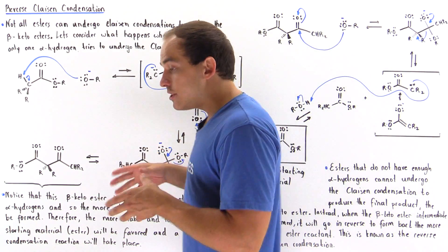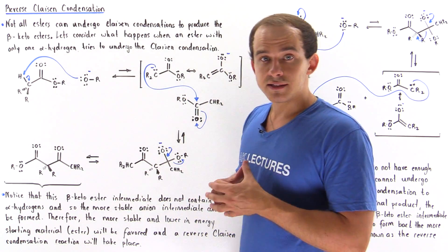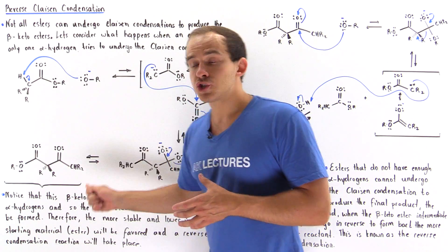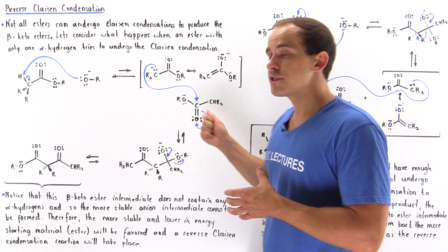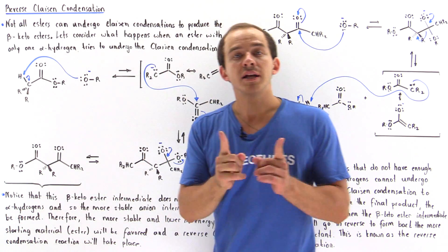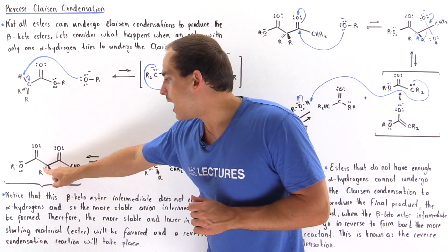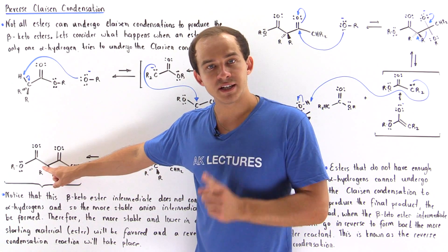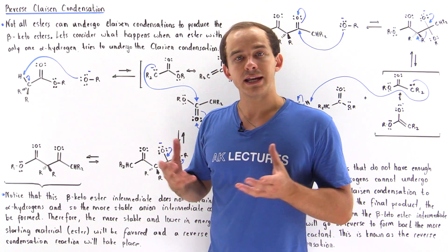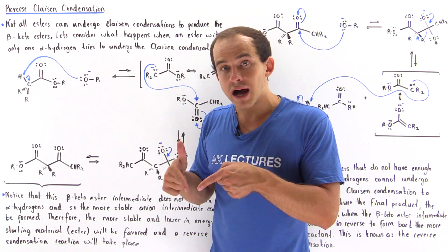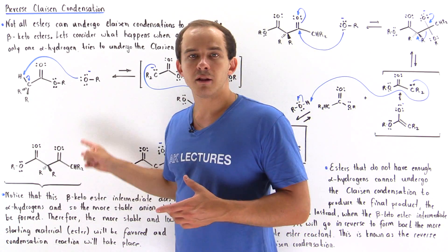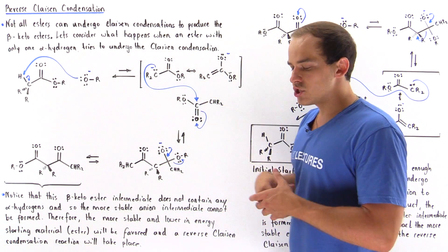In the regular Claisen condensation, this intermediate is not the final product. To produce the final product, the beta-ketoester intermediate must be deprotonated at the alpha carbon position to produce the resonance-stabilized anion intermediate, and that molecule is then protonated to produce the final product, the beta-ketoester.